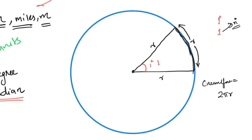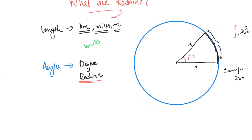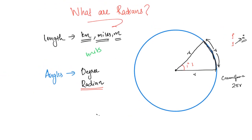Circumference is equal to 2πr. So, we have to divide the length by R to get the angle in radians.